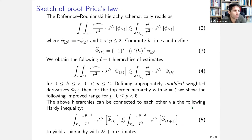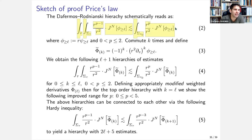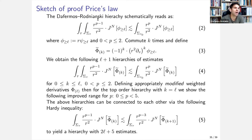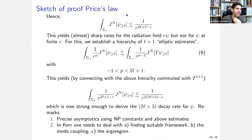The physical-space technique uses a standard hierarchy from Dafermos and Rodnianski extended further using the conserved quantities, allowing us to extend hierarchies, obtain more estimates, derive very fast decay for energy fluxes, and then coupled with elliptic estimates, obtain the final decay rates.